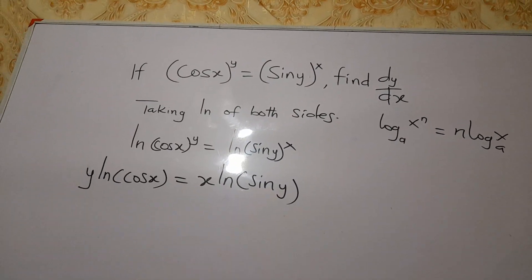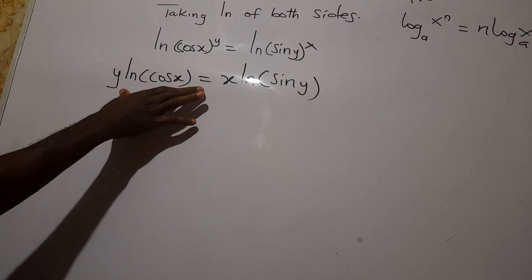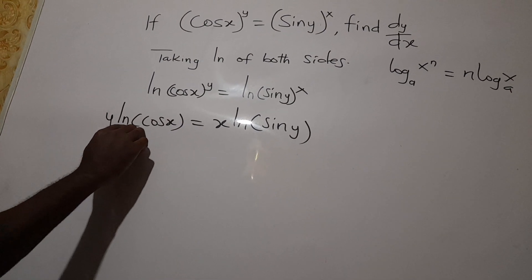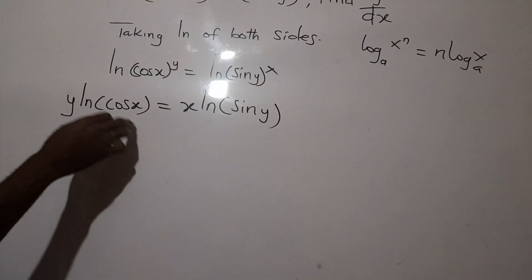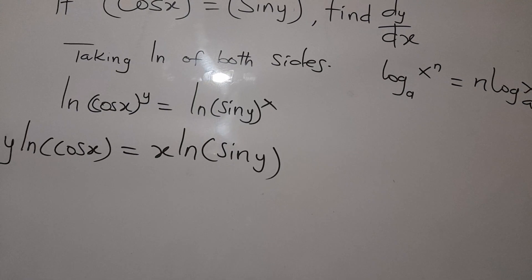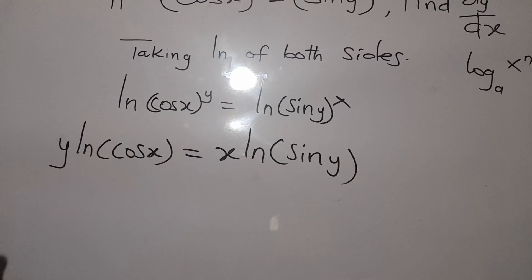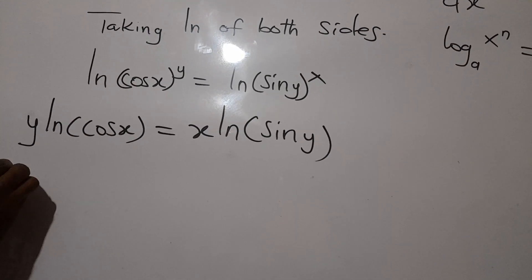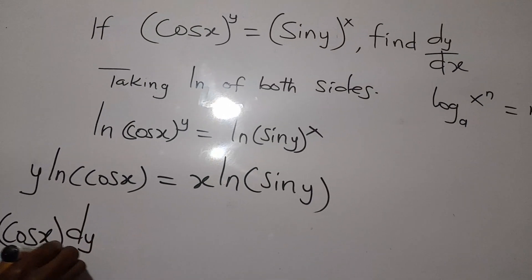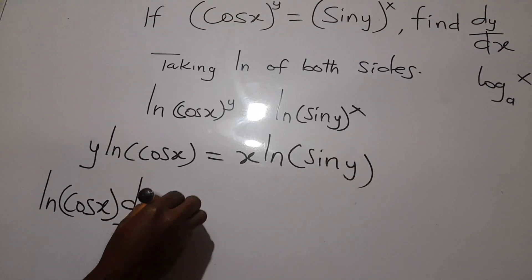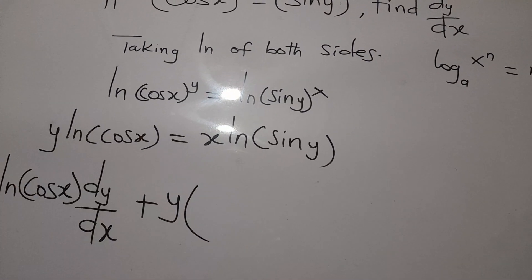Now we differentiate this using implicit differentiation. Remember, the left side is a product, so we apply the product rule: differentiate y leaving ln(cos x), then plus differentiate ln(cos x) leaving y. So we keep ln(cos x) and differentiate y to get ln(cos x)·dy/dx.